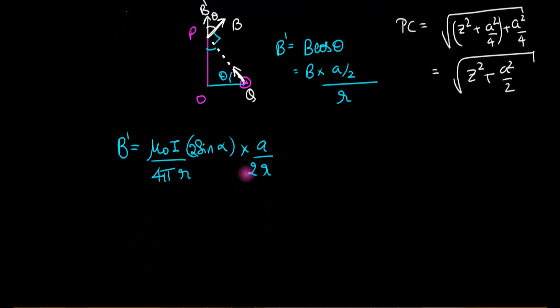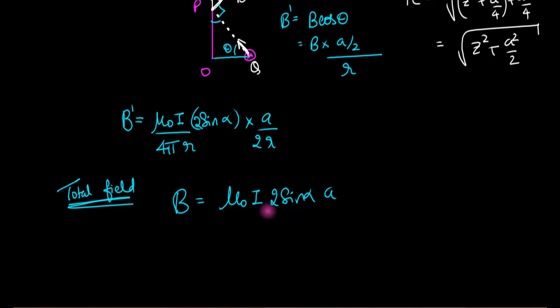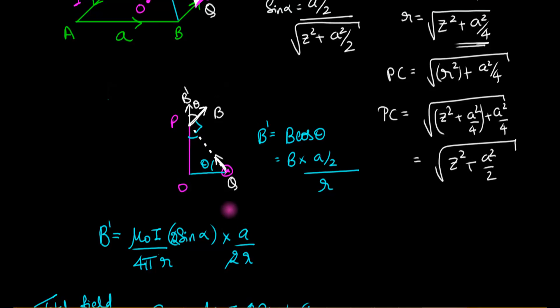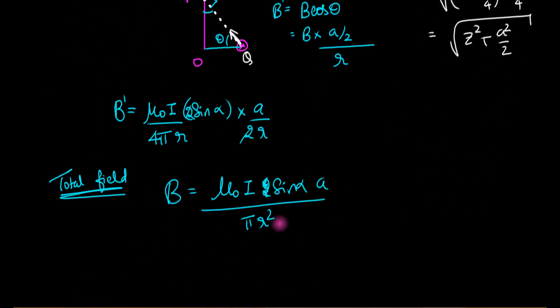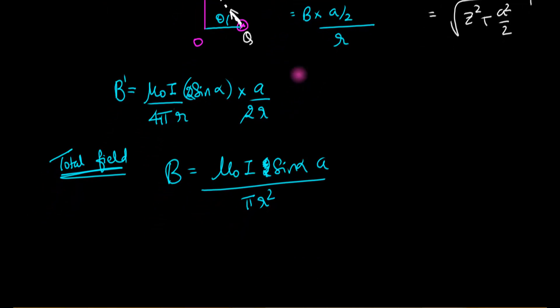The total magnetic field is 4 times this axial component. The factors of 4 and 2 simplify, giving: B_total = (μ₀I × 2 sin α × A) / (π × 2R²). Substituting our expressions for sin α and R² gives the final answer. The derivation is complete — you can write out the fully simplified form yourself.